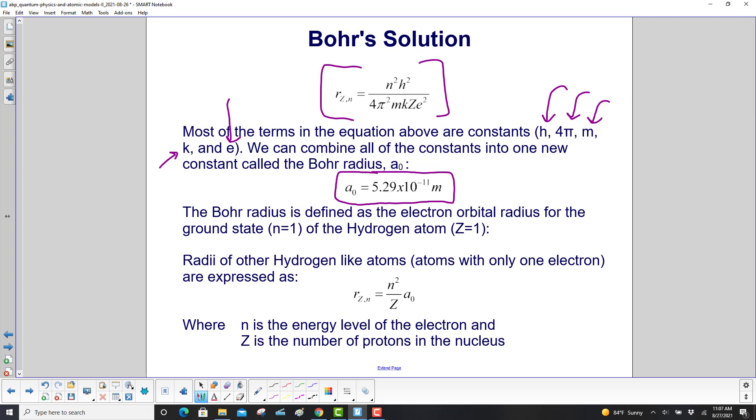The Bohr radius is defined as the electron orbital radius for the ground state, where n equals one, of the hydrogen atom, where z equals one. Radii of other hydrogen-like atoms, and again, we're reminding you, atoms with only one electron, are expressed as this. See how that simplifies? This equation turns into that. n is the energy level of the electron, 1, 2, 3, 4, etc., and z is the number of protons in the nucleus, and a₀ is your Bohr radius.